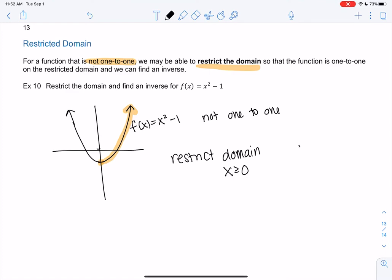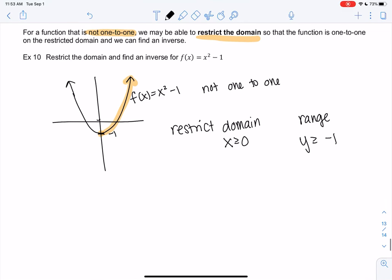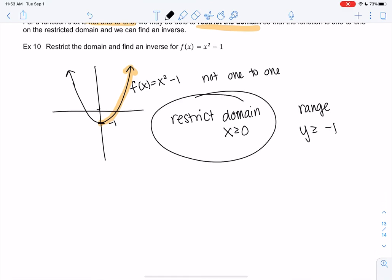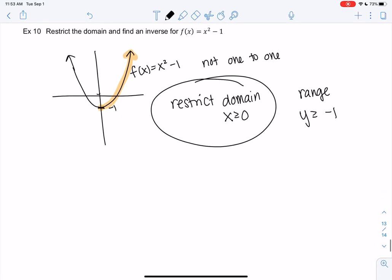I'm not asking for a range, but just to review, the range would be y is greater than or equal to negative 1, because the lowest point is negative 1, and y is always bigger. But we don't need that. But why not refresh on it a little? So let's go ahead and find the inverse. As long as we restrict the domain, we can find an inverse.